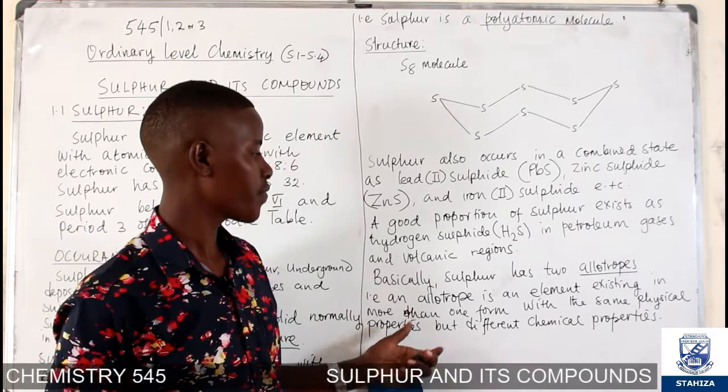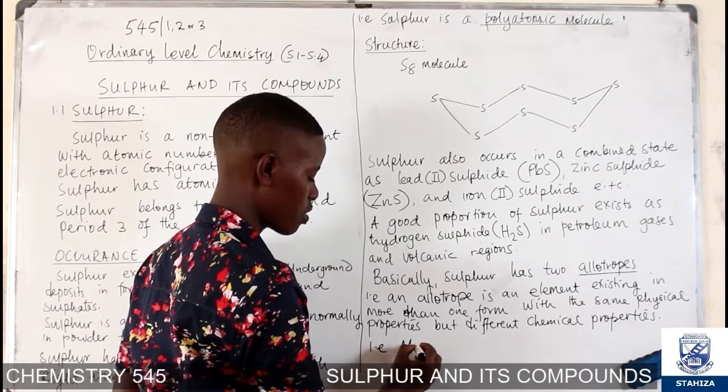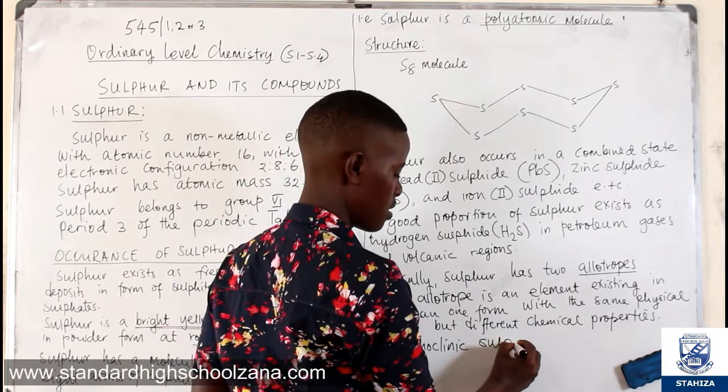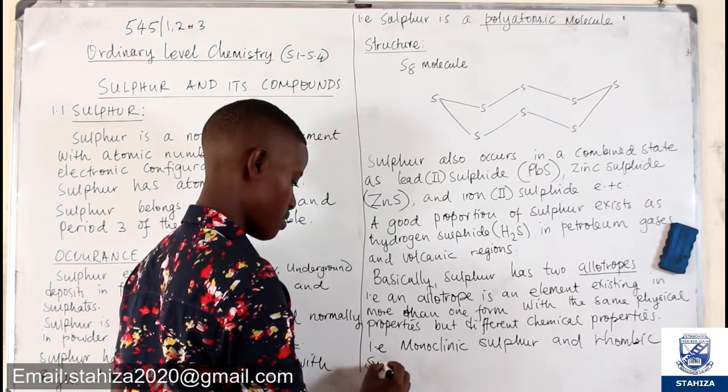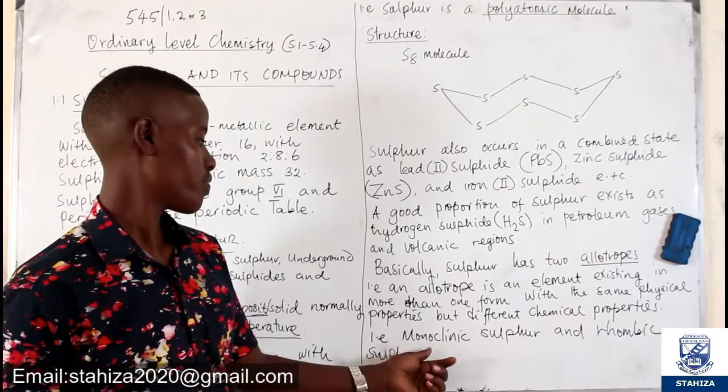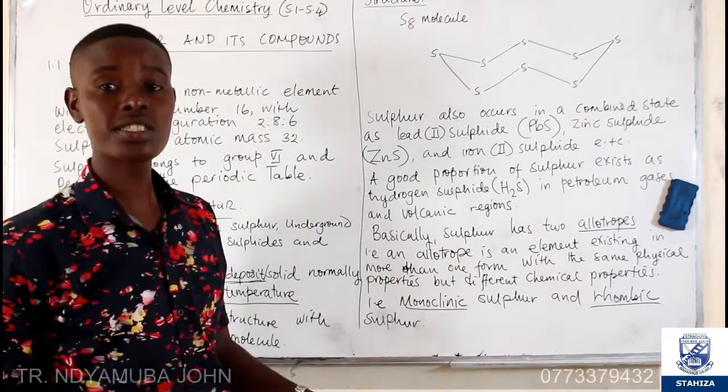An allotrope is an element existing in more than one form. For the case of sulfur, we have what we call monoclinic sulfur and rhombic sulfur. These are the two major forms of sulfur — monoclinic and rhombic sulfur.